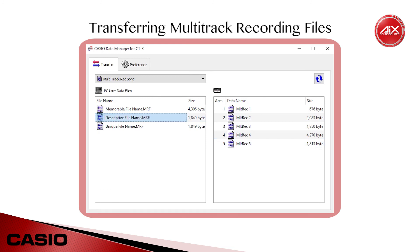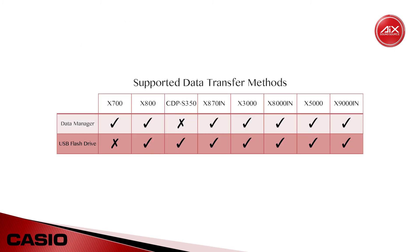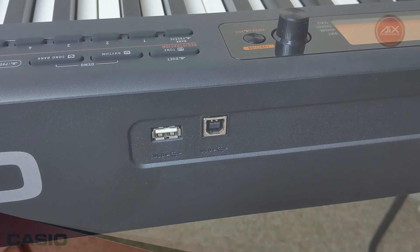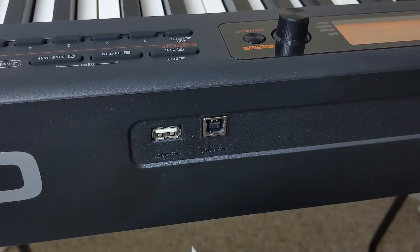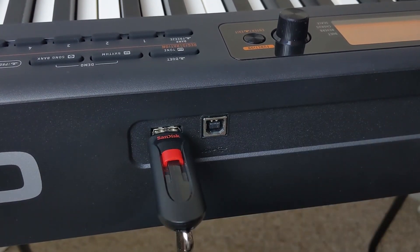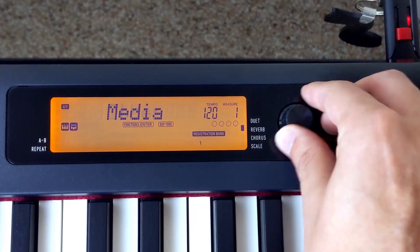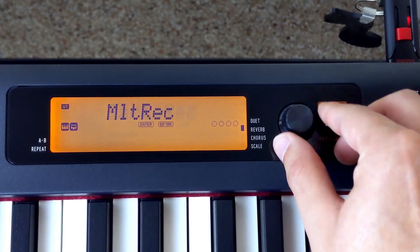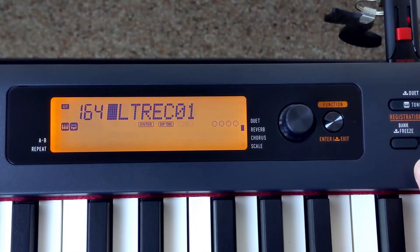That sums up just about everything you need to know to become a Data Manager power user, but one last note before we wrap up. Even though the CDP-S350 is very similar to the CTX-700 and 800, it is unfortunately not compatible with the Data Manager software. However, like the CTX-800, it has an extra USB port on the back panel that allows you to use a flash drive to transfer data back and forth, so stay tuned for the next video in this series where I'll walk you through all the details of that process.